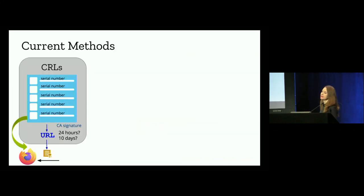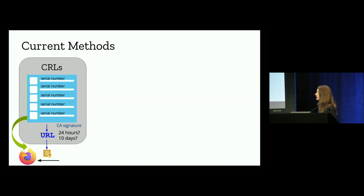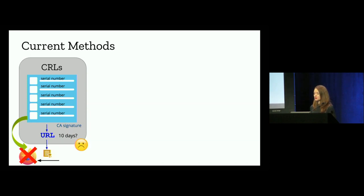What methods currently exist for revocation checking on the web? There are certificate revocation lists — CRLs — which are just lists of revoked certificates produced and signed by the relevant CA. When a CA issues a certificate, it includes a URL to its CRL in the certificate, and it's up to the client to download the CRL and check revocation status. But these things can grow to multiple megabytes before a page can load — they slow down the connection and add latency. So we don't really like CRLs and we don't make use of them in Firefox.